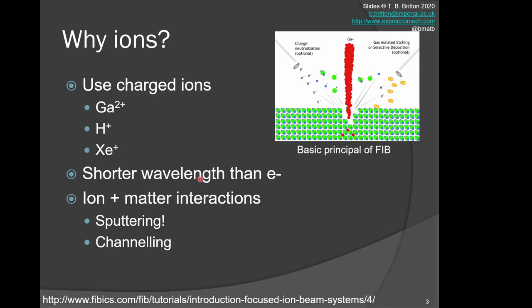So why would we want to use ions? Ions can be used because they're charged, which has a benefit that we can focus those probes. If they're large, heavy ions, they can effectively sputter the surface of the material. We can use a variety of different ions—gallium is commonly used in a lot of FIBs, although we're seeing the increasing use of helium ion microscopes and xenon and other gases. Typically, these have a shorter wavelength due to the de Broglie equation, and in ion-matter interactions they create sputtering, which is really useful.